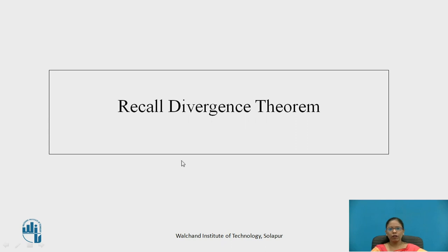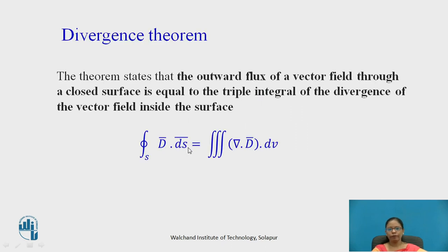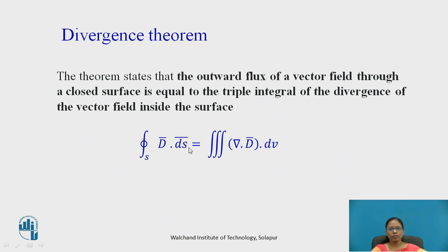Before we proceed further, let us recall what divergence theorem is. Divergence theorem relates the surface integral with the volume integral. It states that the outward flux of a vector field through a closed surface is equal to the triple integral of the divergence of a vector field over the volume element. So the closed surface integral of D-bar dot dS-bar is equal to the volume integral of del dot D-bar dV.